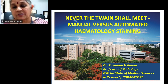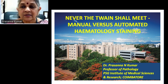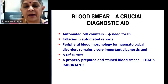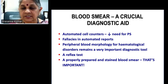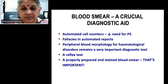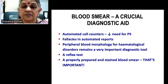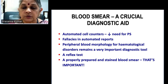Good morning everybody — this is all about automated hematology staining. Blood smear is a very crucial diagnostic aid. Even though we have automated cell counters, there's a feeling of decreased need for peripheral smears, but we know there are fallacies in automated reports. Peripheral blood morphology is a very important diagnostic tool — I'd call it a reflex test when one does a complete blood count. It's vital that we have a properly made and stained peripheral smear.